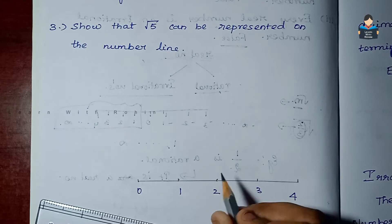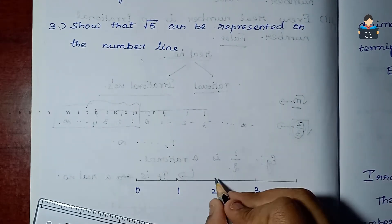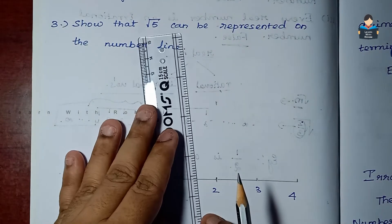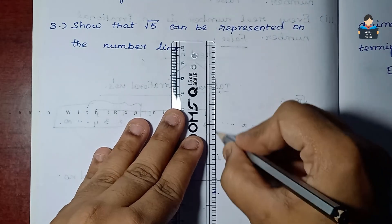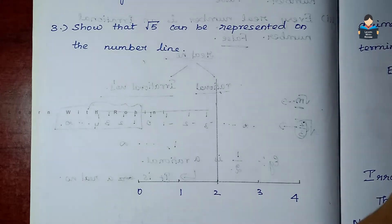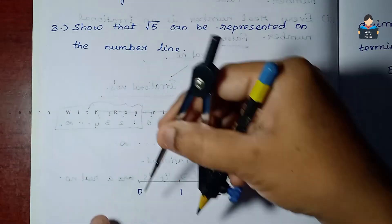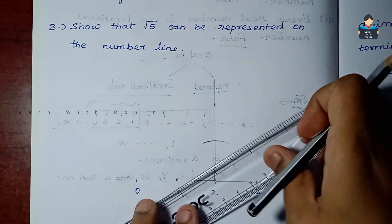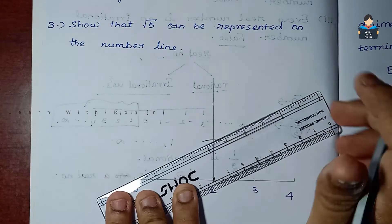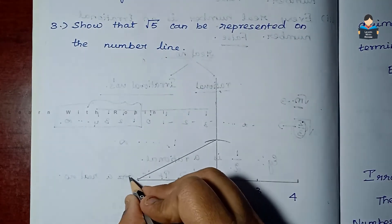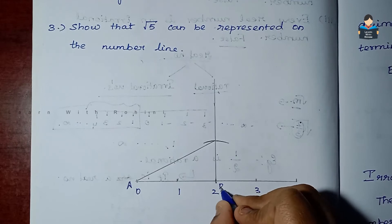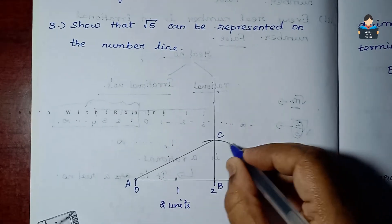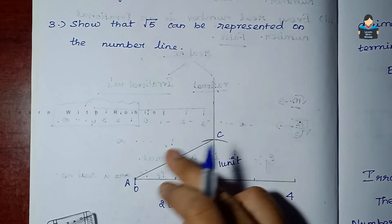We mark the straight line and make a 1 unit measurement. We mark point 0, then mark point A at 2 units from 0 and point B at 1 unit. So we have points A, B, and C on the number line — this point is 2 units and this point is 1 unit. This is how we will mark to find √5.